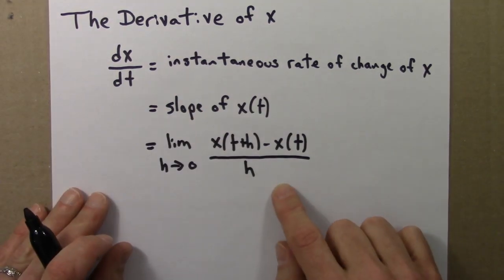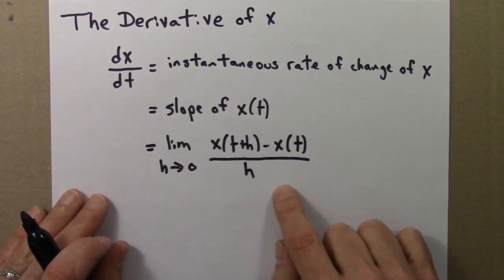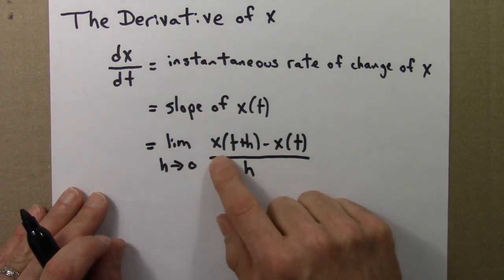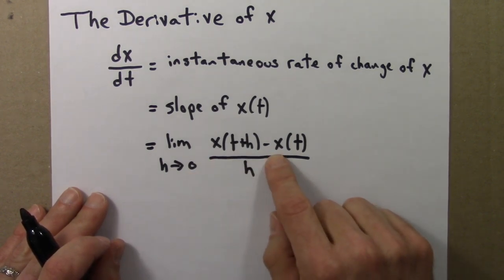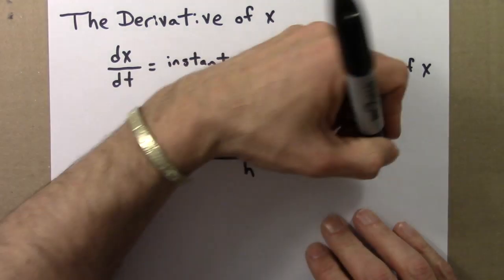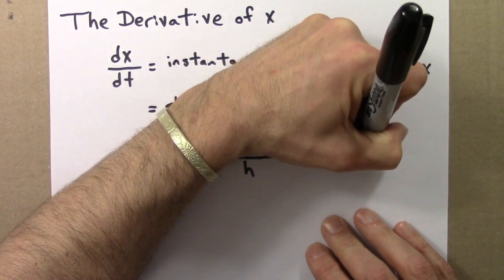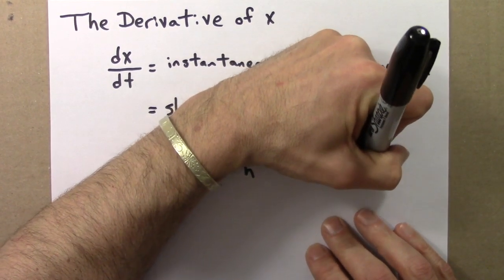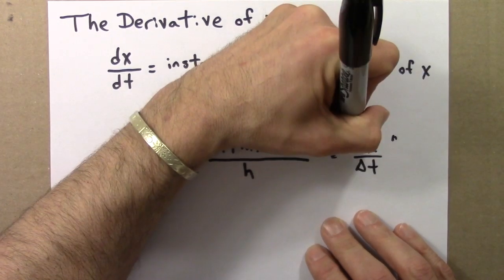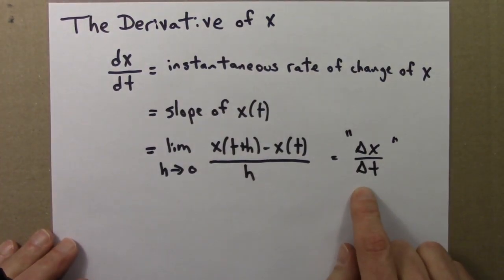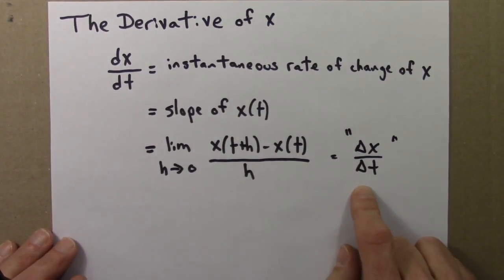And for those of you who have had calculus, here's the formal definition. It's the limit as h goes to 0 of x of t plus h minus x of t over h, which I just like to think of as change in x over change in t, in the limit that these changes become very, very small.